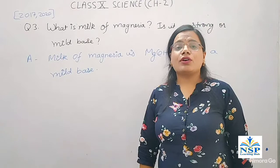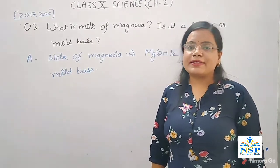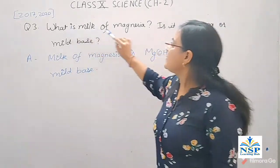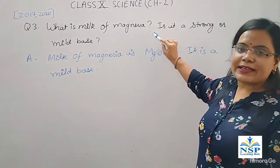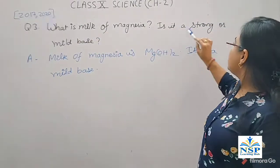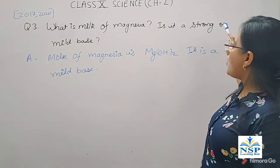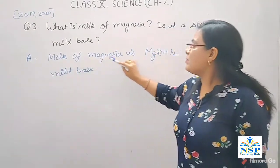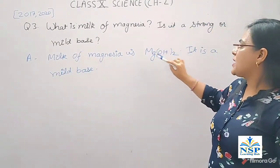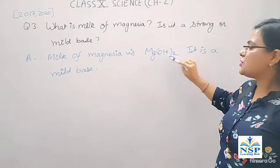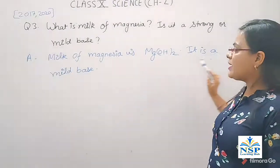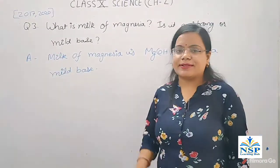Our next important question is: What is the milk of magnesia? Is it a strong or mild base? Milk of magnesia is magnesium hydroxide. It is a mild base.